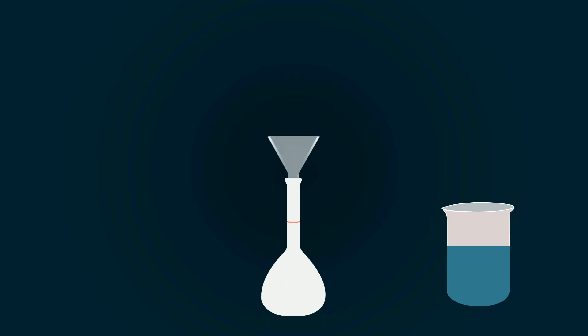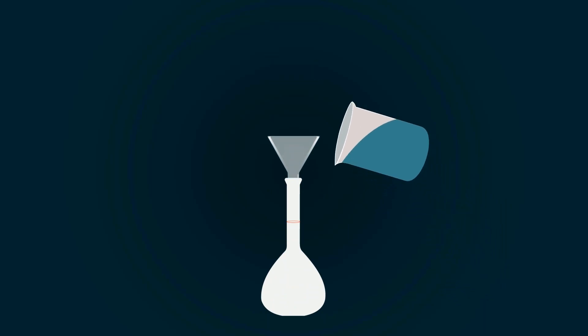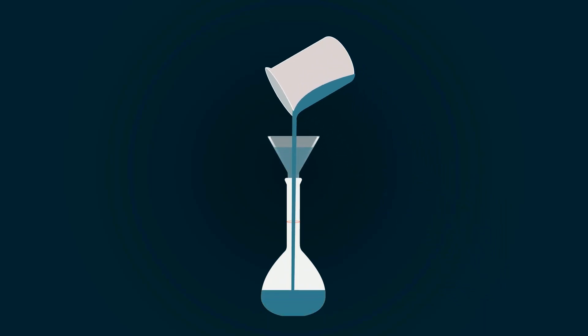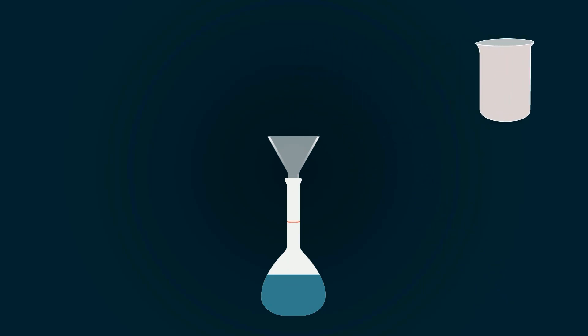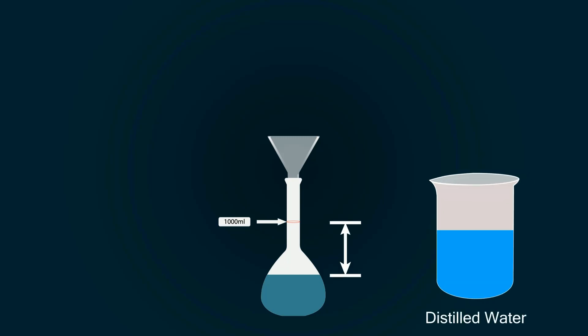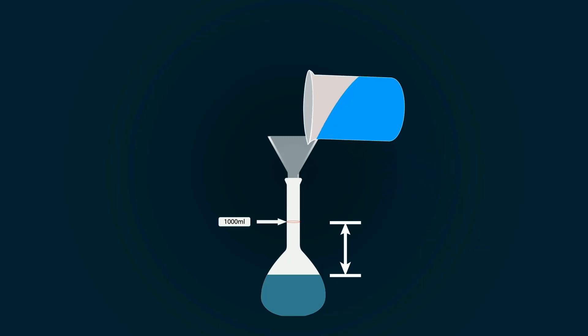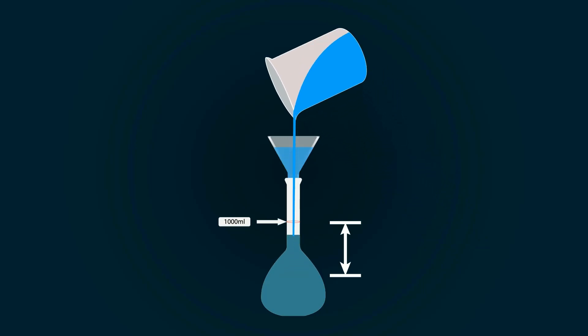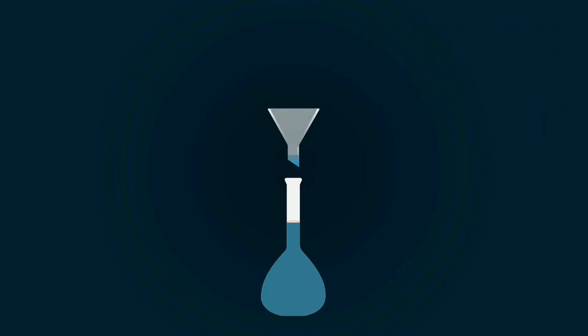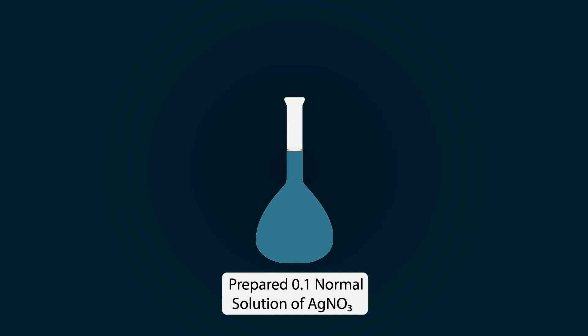Now pour the solution into the volumetric flask with the help of the funnel. You have to fill the flask up to the 1000 ml mark. For that you have to add more distilled water. Take distilled water into the empty beaker and start pouring it into the volumetric flask. Now you have successfully prepared 0.1 normal solution of silver nitrate.